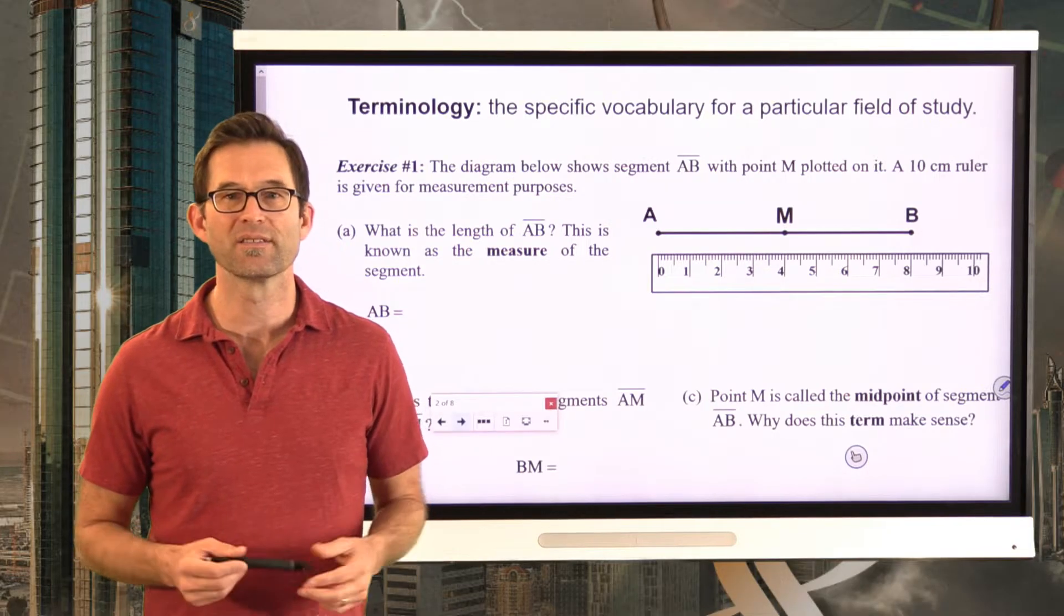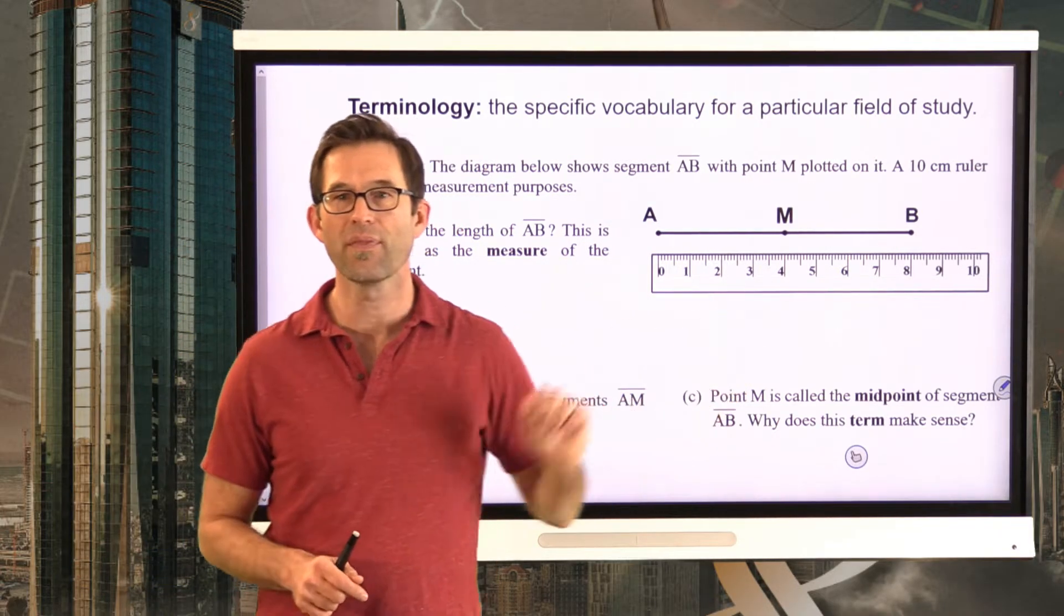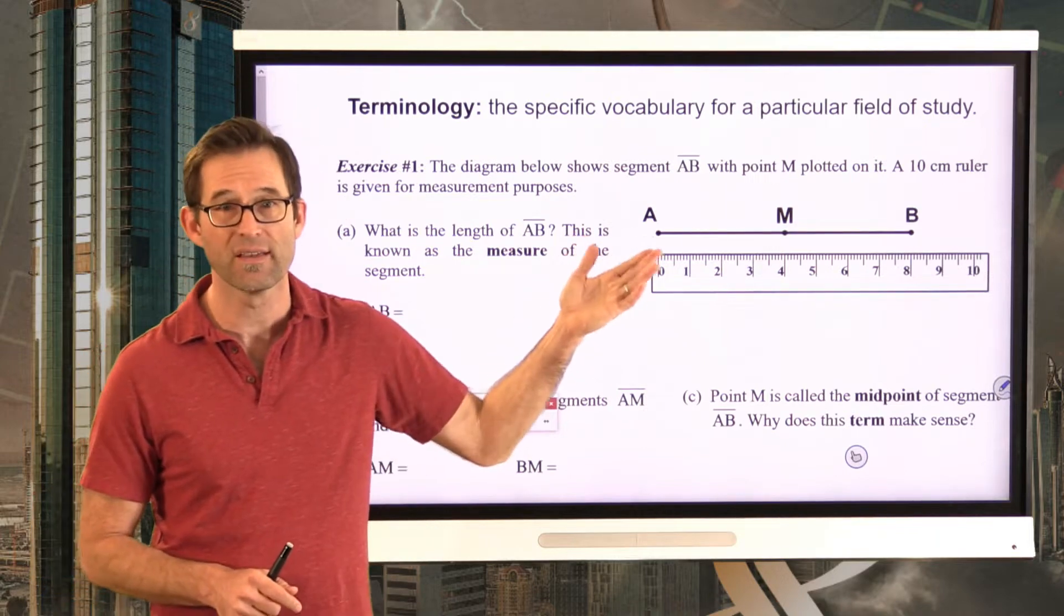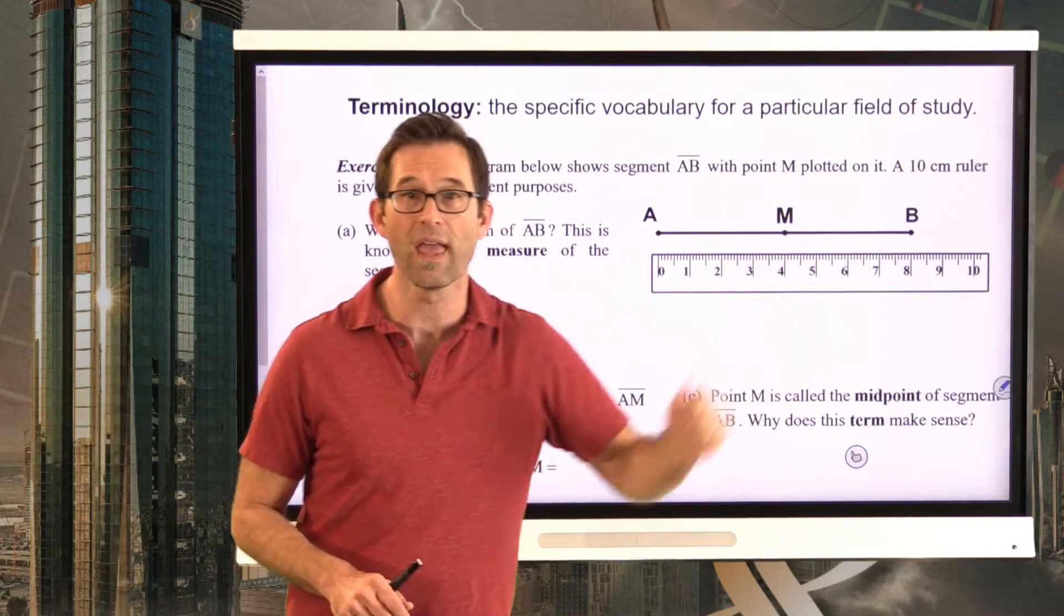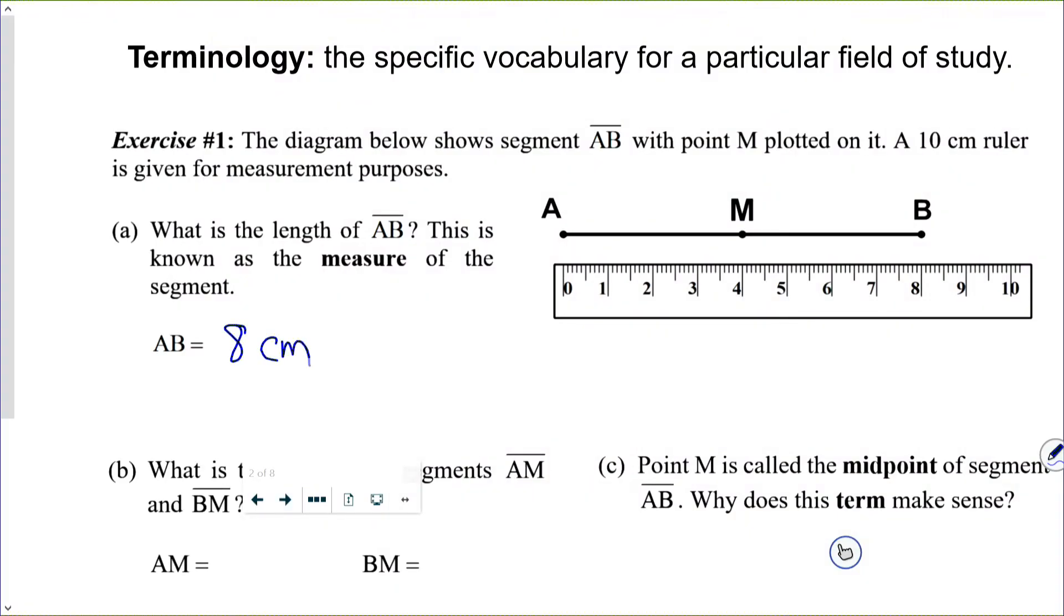Well, I don't think this is going to be very hard. In fact, let's do it together. When I actually look at this thing, I can tell because A is at the zero point and B is at the eight point, that the measure of AB is eight centimeters.